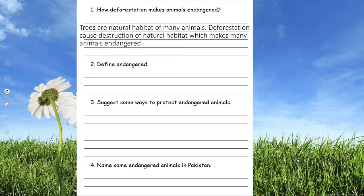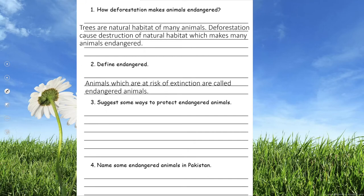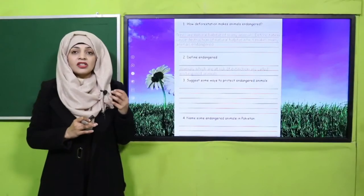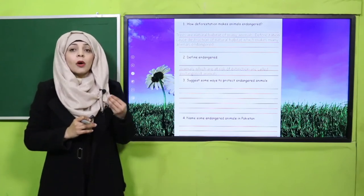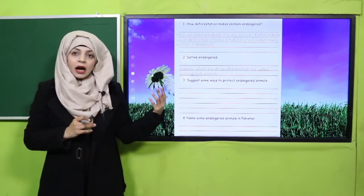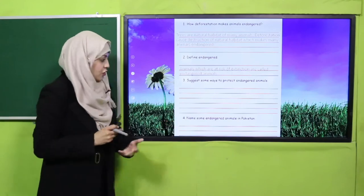Define endangered: Animals which are near to extinction — whose count has become very low — they are called endangered animals. Animals which are at risk of extinction are called endangered animals. Suggest some ways to protect endangered animals: cause awareness, provide natural habitat, stop illegal hunting. These are some ways to protect endangered animals.